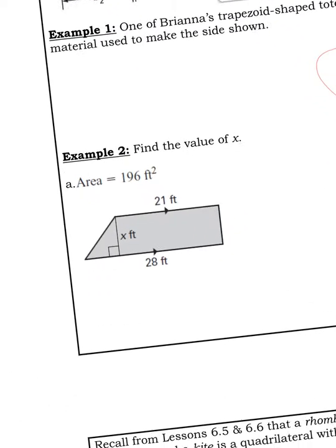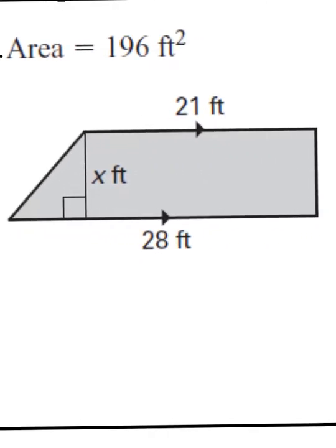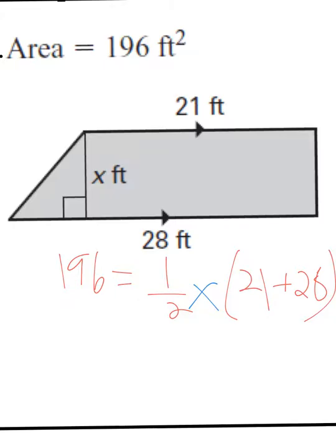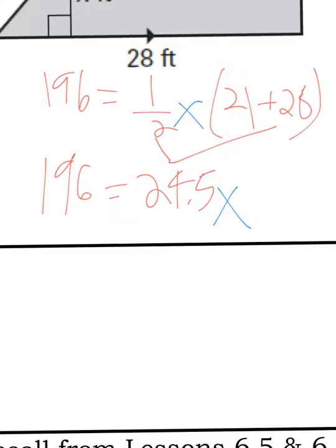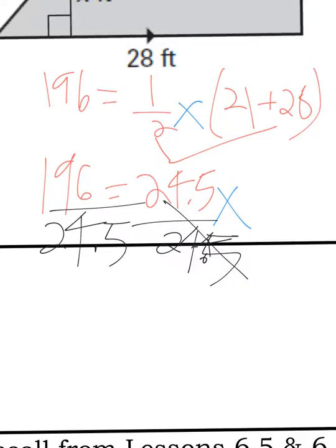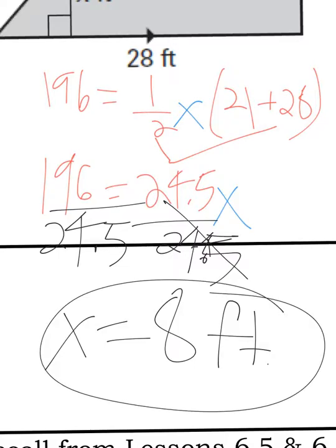On this one, I'm gonna go backwards using the formula. I have area of 196, so I'm gonna say 196 equals one half times—you don't know the height, but you do know base 1 plus base 2. 21 plus 28, that's 49. You can multiply that one half, so half of 49 is 24.5. So I can say 24.5 times x equals 196. Now I can divide over that 24.5, and x is gonna equal—196 divided by 24.5 is 8. So x is 8 feet. That's how you solve for missing height.